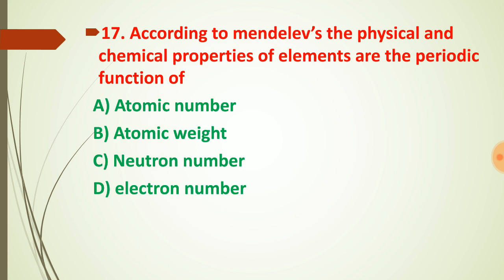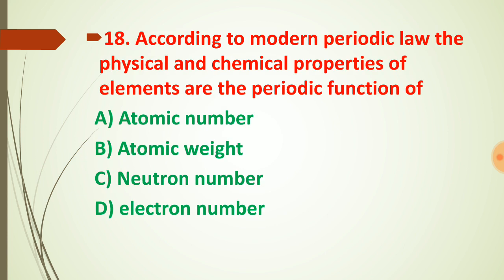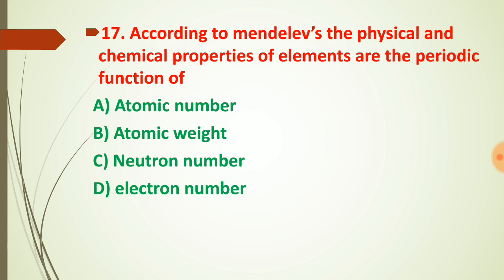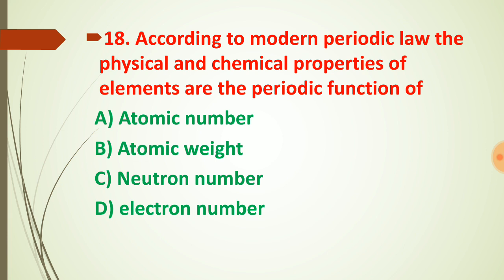Question number seventeen and eighteen relate to Mendeleev's periodic law: the physical and chemical properties of elements are a periodic function of atomic mass. We have two laws — Mendeleev's periodic law and the modern periodic law. Try to find the answers to questions seventeen and eighteen by yourself, and comment for any confusion.